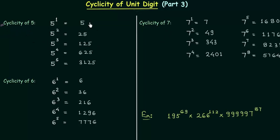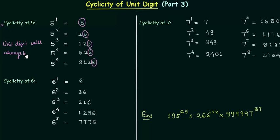If you look at the unit place of these numbers every time you will find 5. So the unit digit will always be 5. This is what you have to remember in case of cyclicity of 5 — the unit digit will always be 5. If we have 5 raised to power n, then the unit digit will be 5.